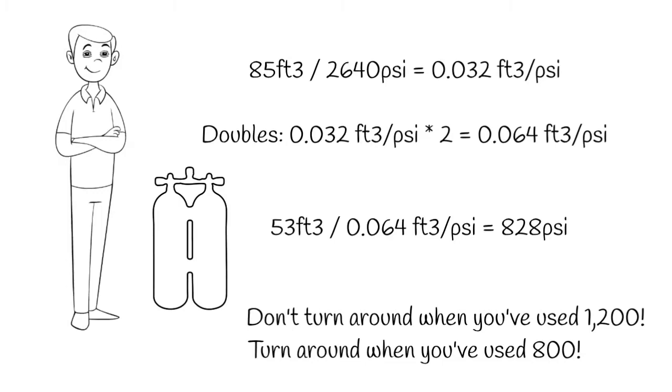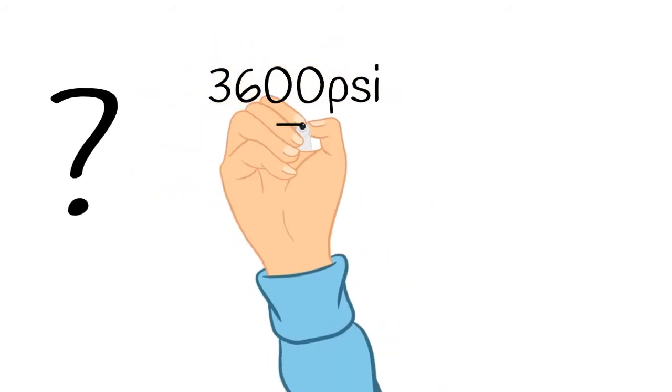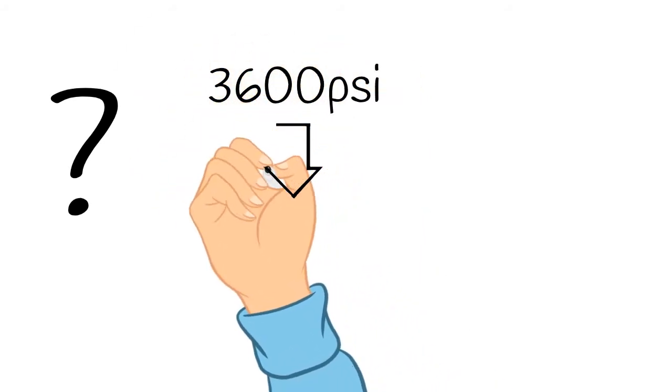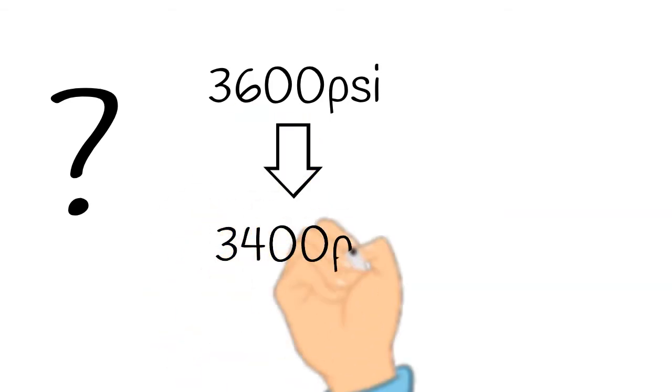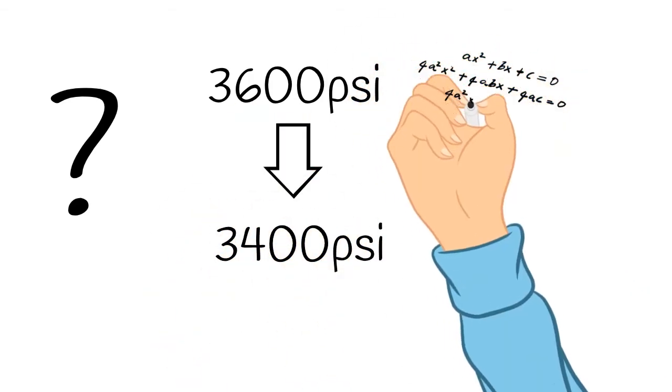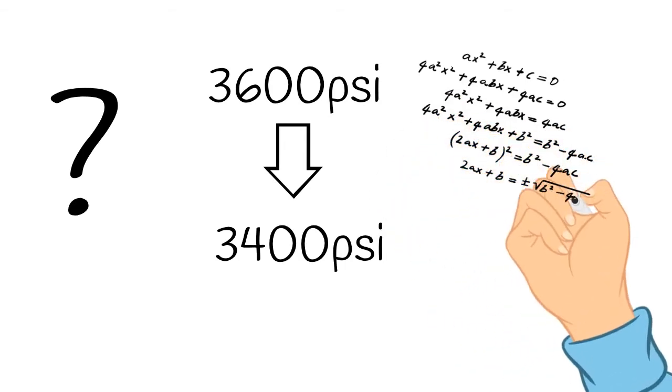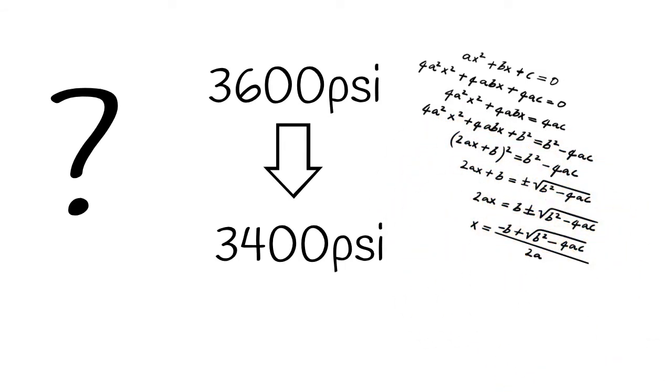So then the question comes up of what happens when I get in the water and the pressure in my cylinders change because the temperature of the water is different than the temperature that they were filled up? Well, that happens pretty much every time you get in the water. So do you have to do math just like we did with the baselines every time you get in the water? Absolutely not. That would be totally insane.